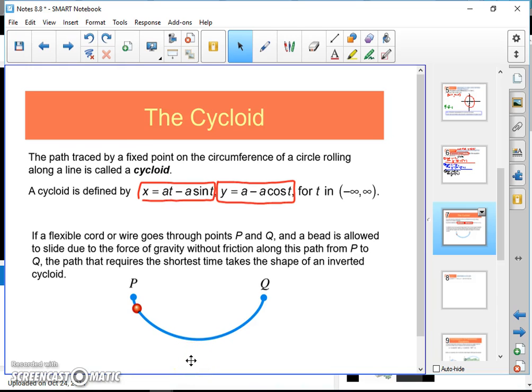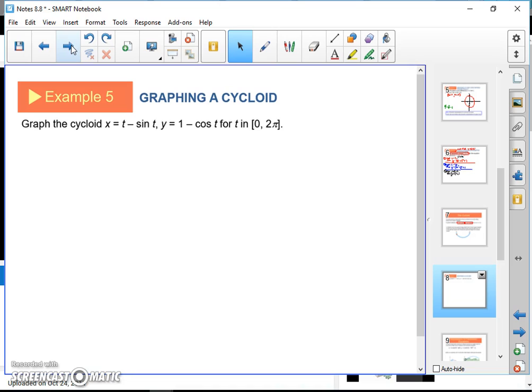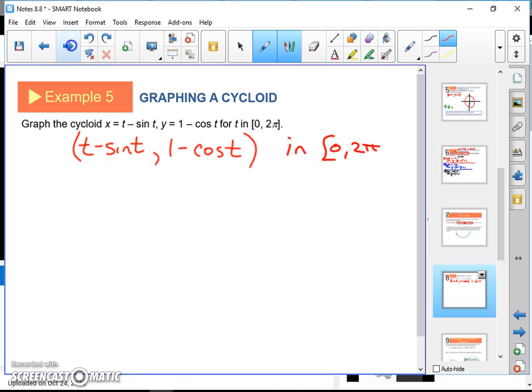A cycloid is going to take kind of this path. It looks like a bounce or a hop. So example five, we're going to graph this cycloid. No problem with Desmos. We're going to graph this cycloid. So look at this as an ordered pair. There's your X, and there's your Y in the interval from zero to 2π. So let's graph that.